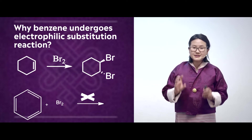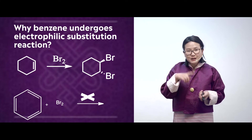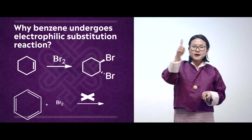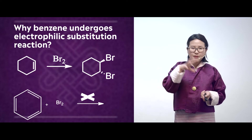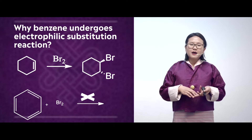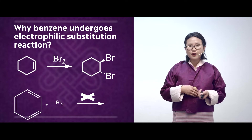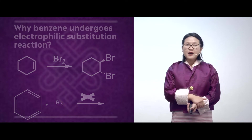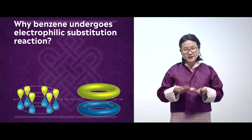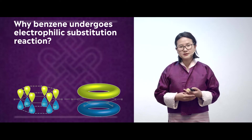Benzene, though it contains pi electrons, doesn't undergo electrophilic addition reaction because it is unusually stable. This unusual stability is due to delocalization of electrons. So if it doesn't undergo electrophilic addition reaction, why does it undergo electrophilic substitution reaction?